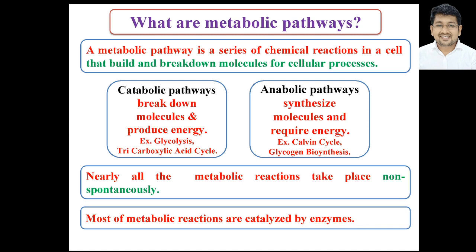On the other hand, an anabolic pathway is intended to synthesize molecules and needs energy for its operation. Both catabolic and anabolic pathways require enzymes for their functioning — that's why we can call them non-spontaneous. Regulation of these enzymes will lead to regulation of the pathway. If you want to increase the speed of a pathway, you can increase the speed of enzymes involved, and if you want to decrease it, you slow down those enzymes.